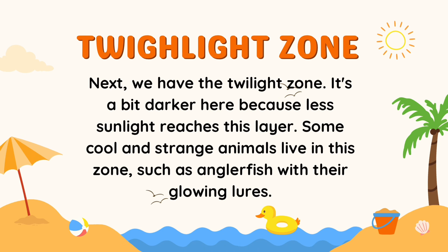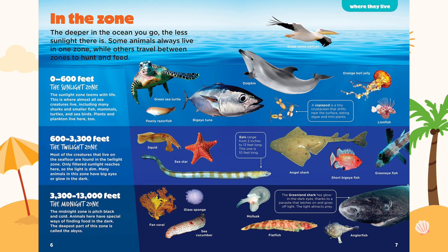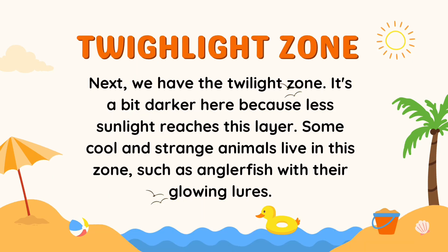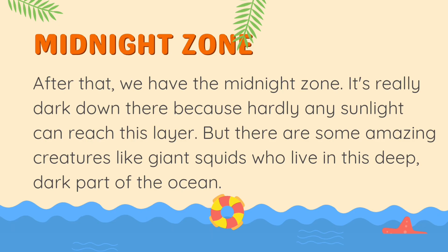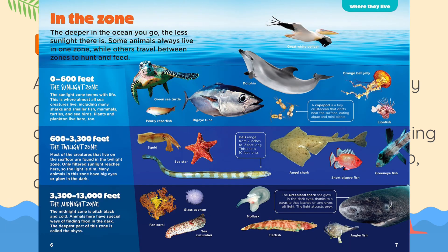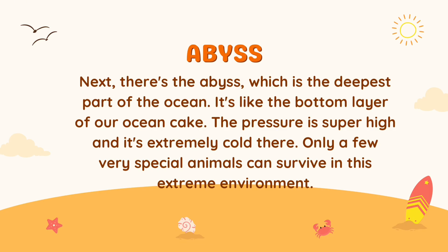Next we have the twilight zone. It's a bit darker here because less sunlight reaches this layer. Some cool and strange animals live in this zone, such as anglerfish with their glowing lures. Then there's the midnight zone — it's really dark down there because hardly any sunlight can reach this layer, but there are some amazing creatures like giant squids who live in this deep dark part of the ocean.